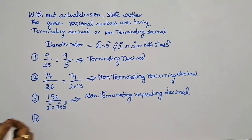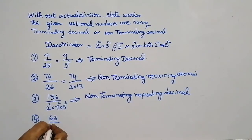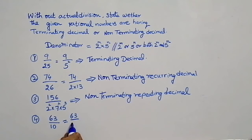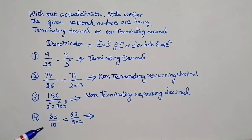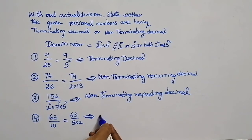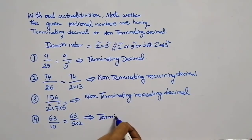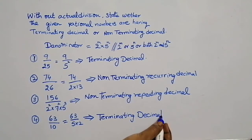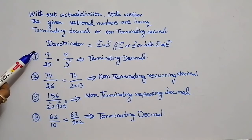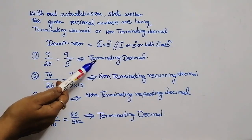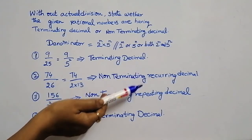Next example: 63 by 10. Here, 10 = 5 into 2. If we observe the denominator, we have only 5 and 2 — this condition is satisfied. Therefore, the decimal representation of this rational number terminates. It is a terminating decimal.